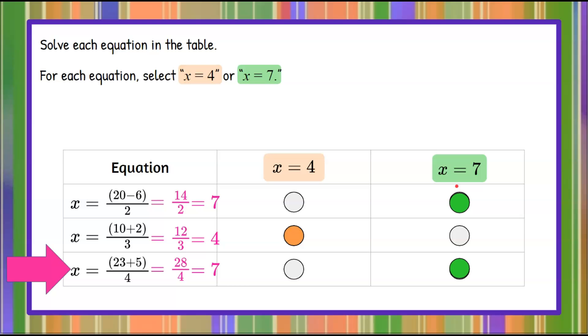So there you have it. We have the first equation, x equals 7, the second, x equals 4, and the third, x equals 7.